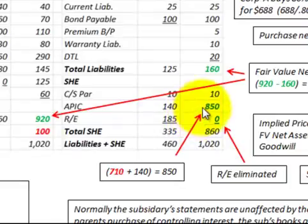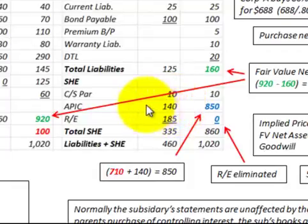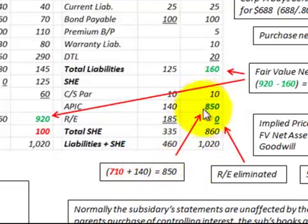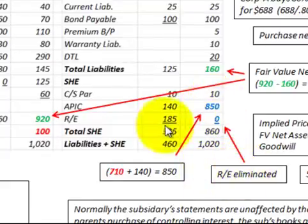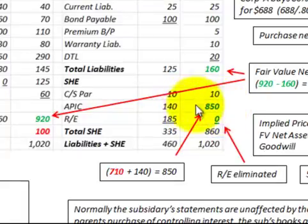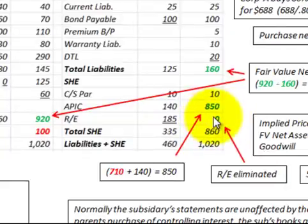Looking at the balance sheet again — for additional paid-in capital, we had an existing amount of $140,000. We add the $710,000 for the changes that have to be made plus the existing $140,000, giving us a total additional paid-in capital of $850,000. At the same time, we eliminate the retained earnings: we had retained earnings of $185,000, so we reduce that to zero. So we've adjusted our additional paid-in capital for that total change of $710,000 and reduced retained earnings down to zero.